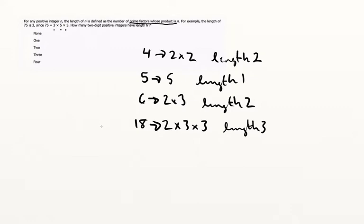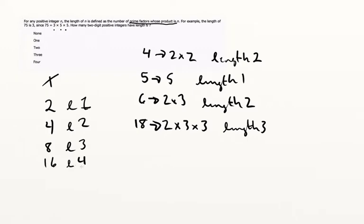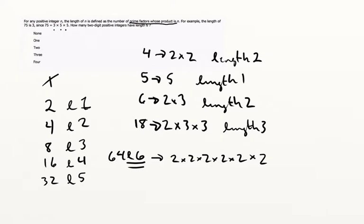What would make something long? Its prime factors, of course — 1 doesn't count, we can ignore that. If we look at 2: it has length 1; 4 has length 2; 8 has length 3; 16 has length 4; 32 has length 5; and 64 has length 6. So 64 has got to be one of our answers, because that's 2 times 2 times 2 times 2 times 2 times 2 — six twos — so that's length 6.